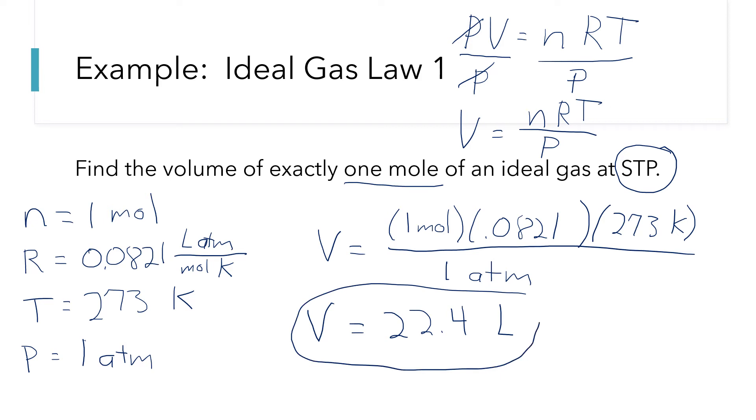This is the number off the radiation sign. Because on the radiation sign, we said that the volume of one mole of gas at STP is 22.4 liters. So now you see where that number came from.